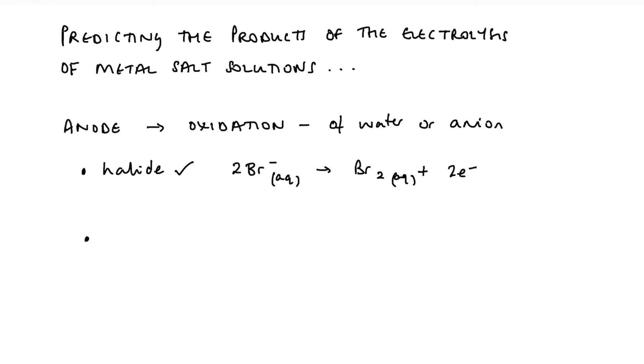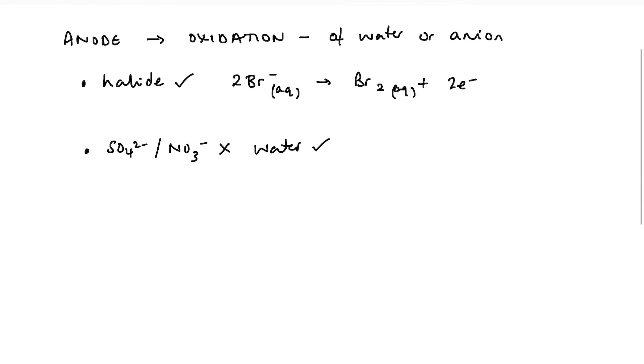If the salt or the anion is a sulfate or a nitrate, so say copper sulfate, zinc nitrate, then water is oxidized, so for sulfates or nitrate, then it's water that's oxidized. And we've seen the half equation for that. So 2H2O, going to form 4H+, plus oxygen, plus four electrons. So the product of the anode would be oxygen gas.